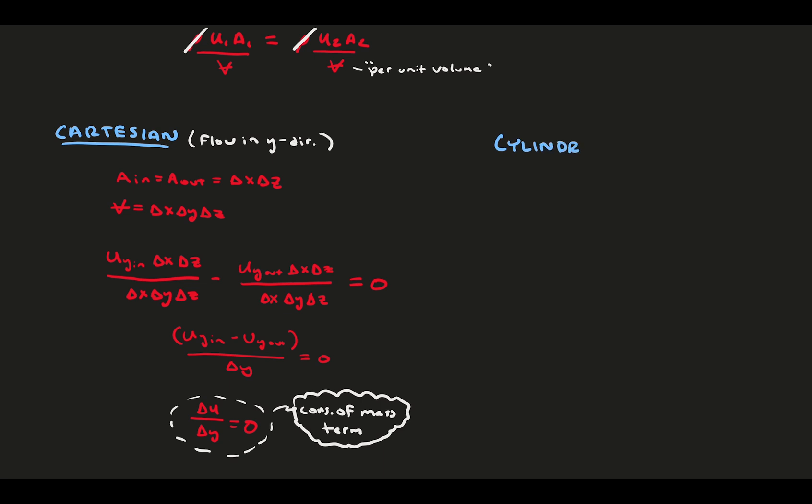In cylindrical, things are a bit harder. Consider flow in the radial direction r. The area out is r plus delta r times delta theta and delta x. The area in is r delta r times delta theta times delta x. Slightly smaller. The volume is estimated as r delta theta delta r delta x.